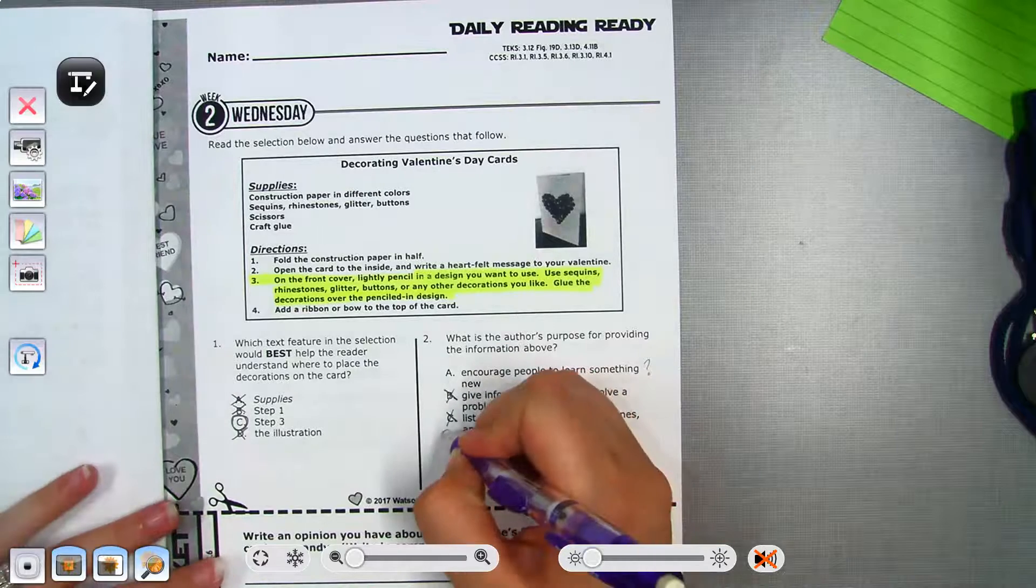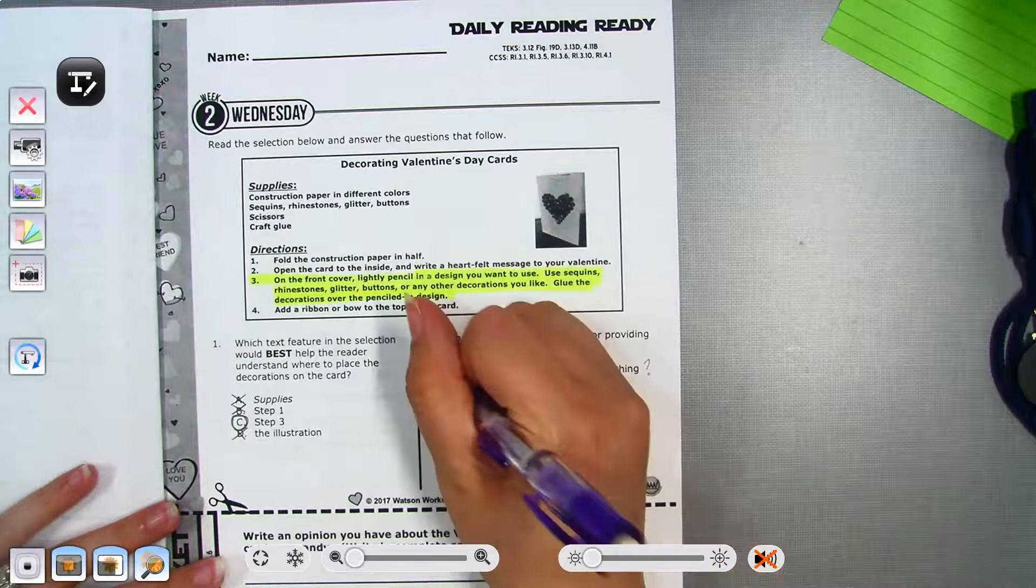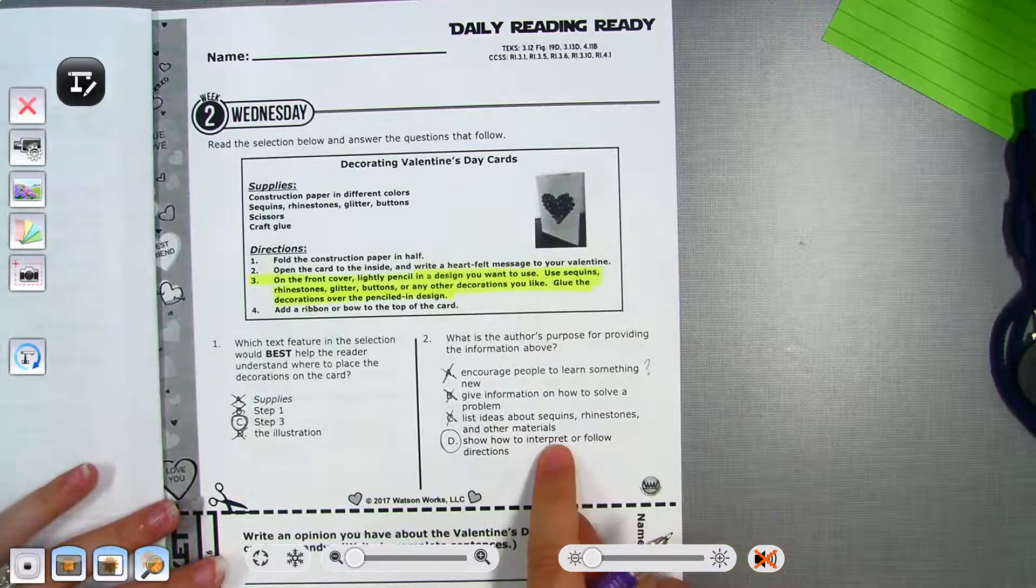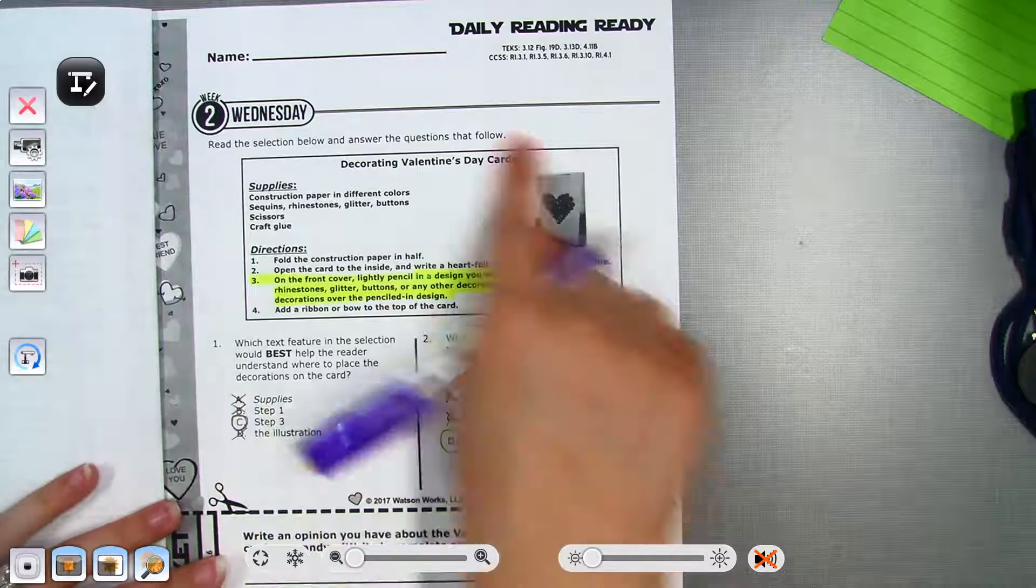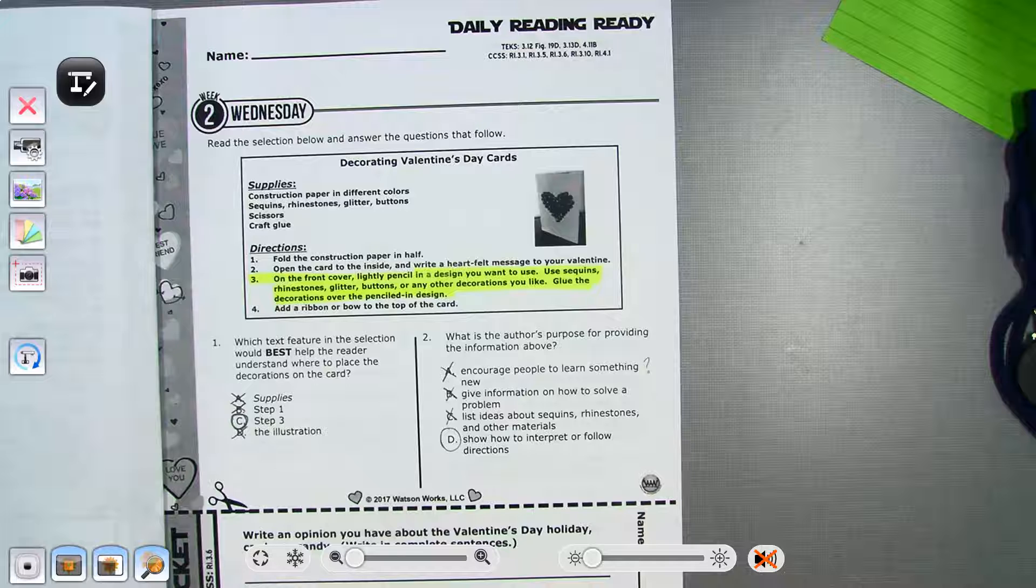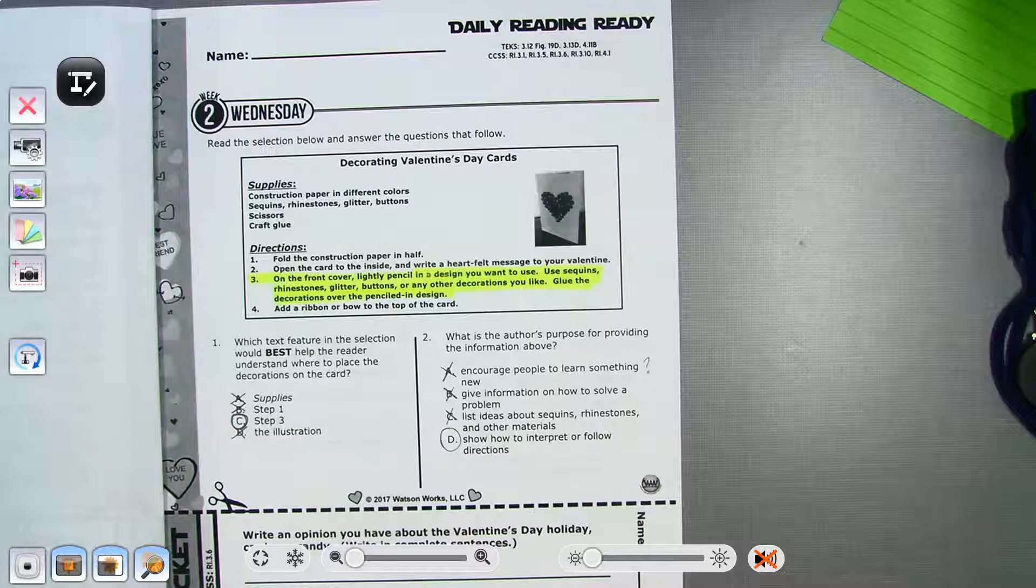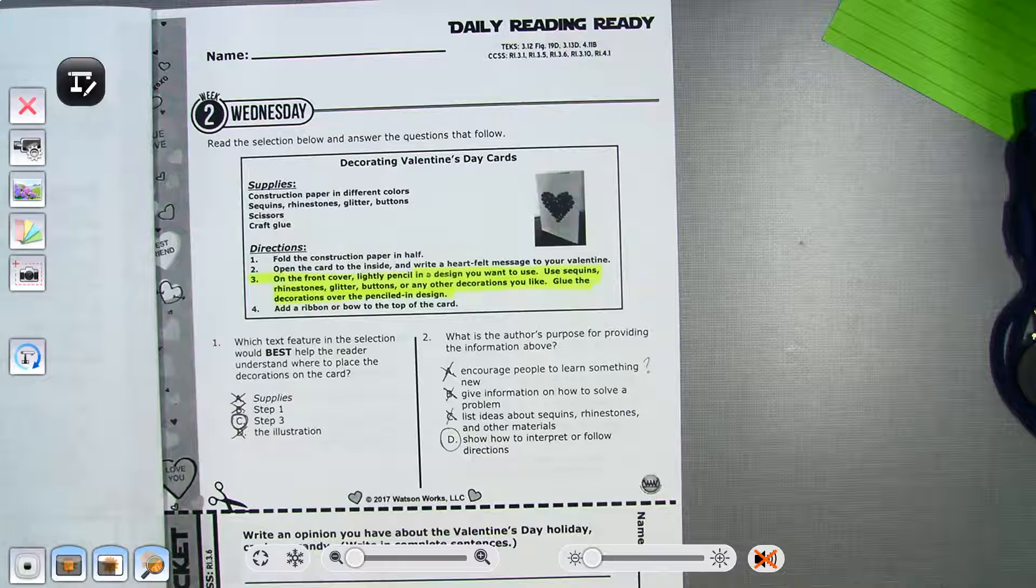So, D, to show how to interpret or follow directions. See, I narrowed it down to two choices. Because this could encourage someone to learn something. But it's actually to show how to interpret or follow directions, to show how to understand and follow the directions on making the card. Okay. So, sometimes, guys, you're going to narrow it down to two choices. And you're going to have a hard time trying to figure it out. You're just going to have to kind of think through it and think what would be the best possible answer.